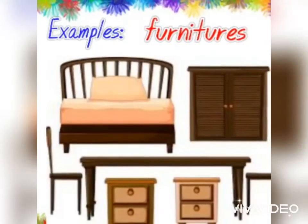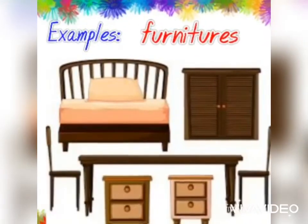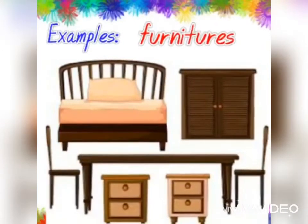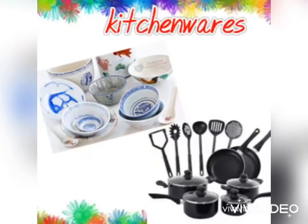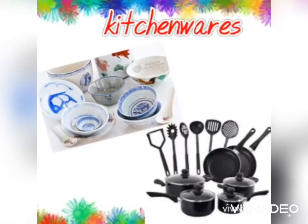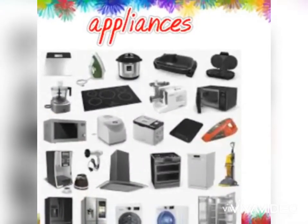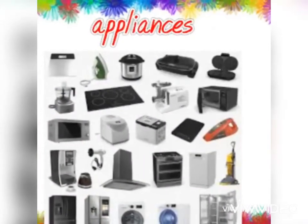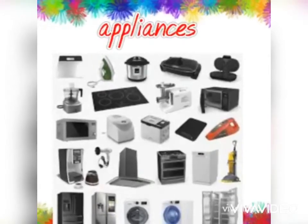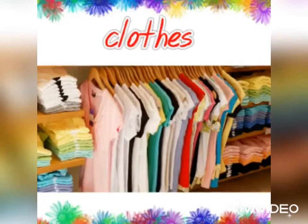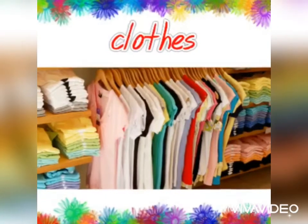Examples are furniture like your chairs, tables, and cupboards. Kitchenwares like plates, ladles, pots, and glasses. Appliances like fridge and televisions. Clothes like shirts, undershirts, and socks are man-made or artificial.